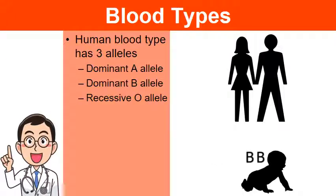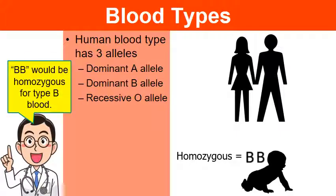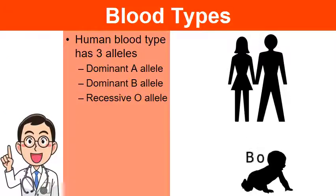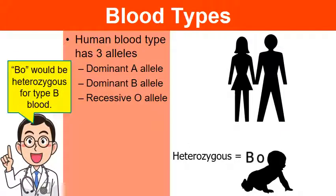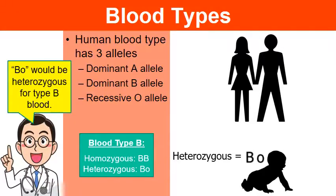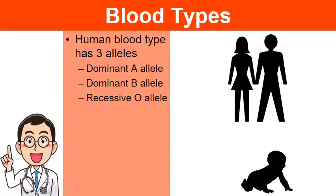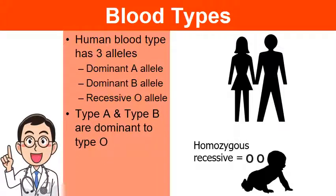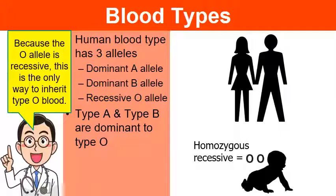If a child receives a dominant B allele from each parent, we call this homozygous for blood type B. If the child receives a dominant B allele from one parent and a recessive O allele from the other, this is still blood type B — heterozygous. So for blood type B, there are also two possible genotypes. If a person inherits two recessive O alleles, we call this homozygous recessive. Type A and type B are dominant to type O, and this is the only way to inherit blood type O — two recessive O's is the only combination that leads to blood type O.